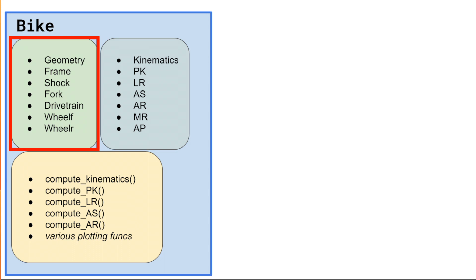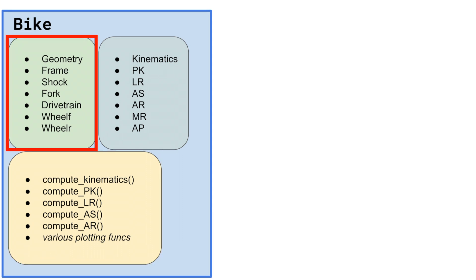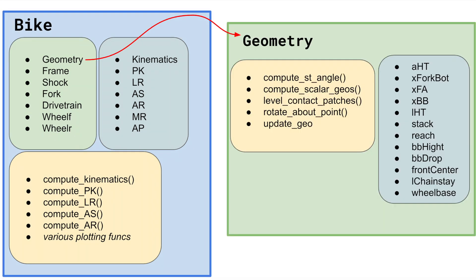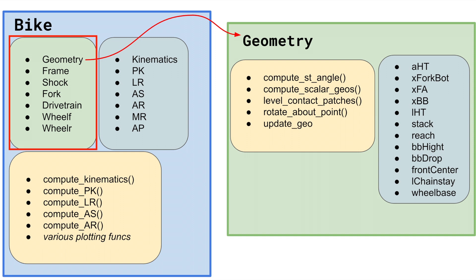We also have other attributes: geometry, frame, shock, fork, drivetrain, front wheel, rear wheel. On top of that, we have methods — functions within the bike class that allow us to compute things, most importantly kinematics, because kinematics allow us to compute all the other relevant things for the optimizer. The green attributes on the left are custom classes I've built out. For example, the geometry class has attributes like head tube angle, position of the fork bottom, front axle position, BB position — each attribute of the bike is its own class with its own data, which is a clean and scalable way to represent complex data structures.